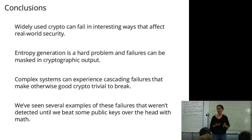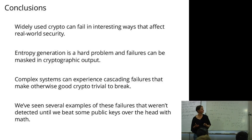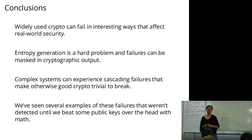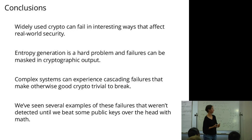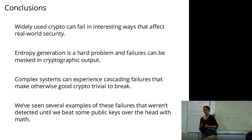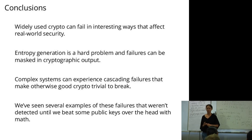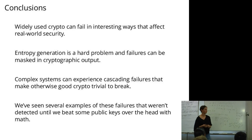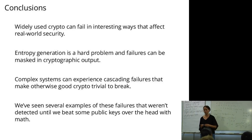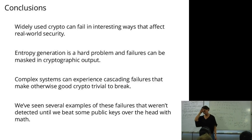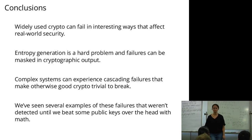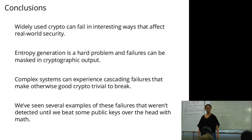In conclusion: widely used crypto can fail in interesting ways that affect real-world security — interesting both mathematically and from a systems perspective. Entropy generation is a really hard problem that gets screwed up over and over again in the real world. Complex systems can experience cascading failures that make otherwise good crypto trivial to break through basic math tricks. Several such failures were not caught until we looked mathematically at the public keys, which were the only visible output of the random number generation. Thank you.